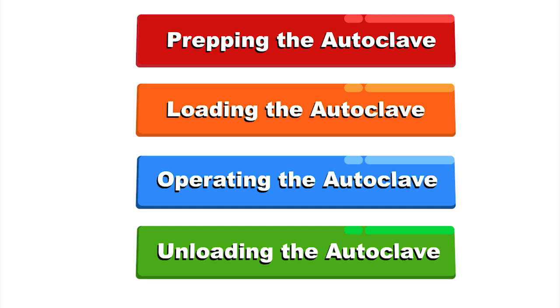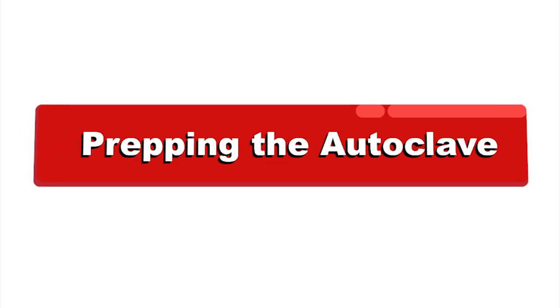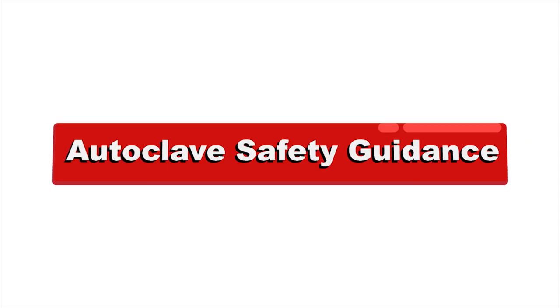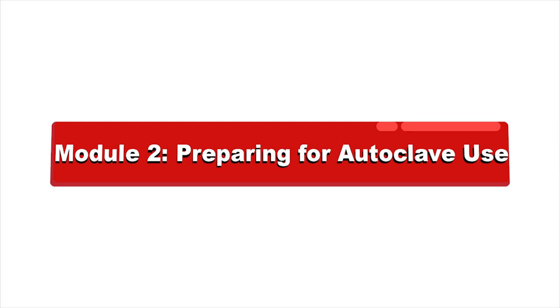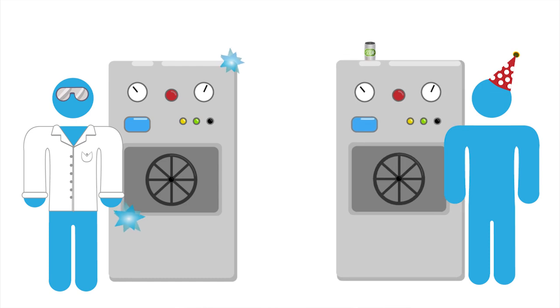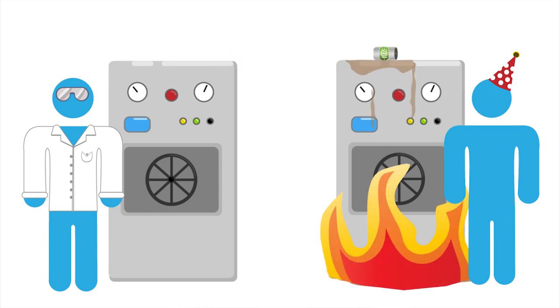Module 2, Preparing for Autoclave Use. As with all equipment, there is a good way and a bad way to use an autoclave. It is important to be mindful of the potential hazards along each step of the way. There are two steps one needs to follow to prepare using an autoclave. The first is to make sure the autoclave is in good working order. The second is to properly prepare materials for autoclaving.